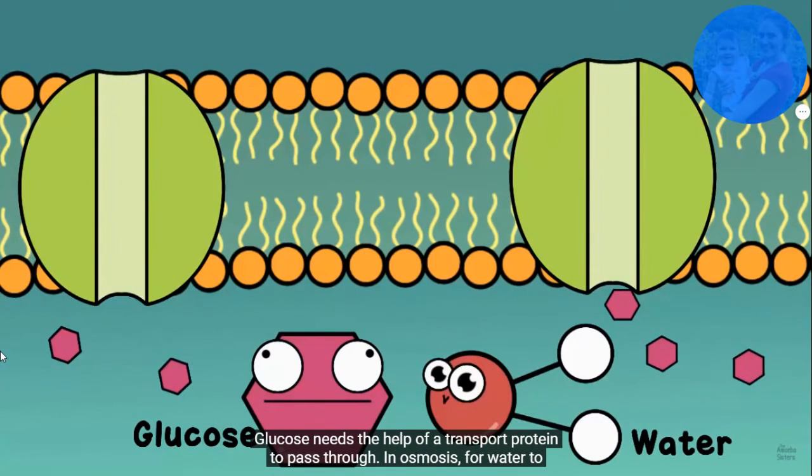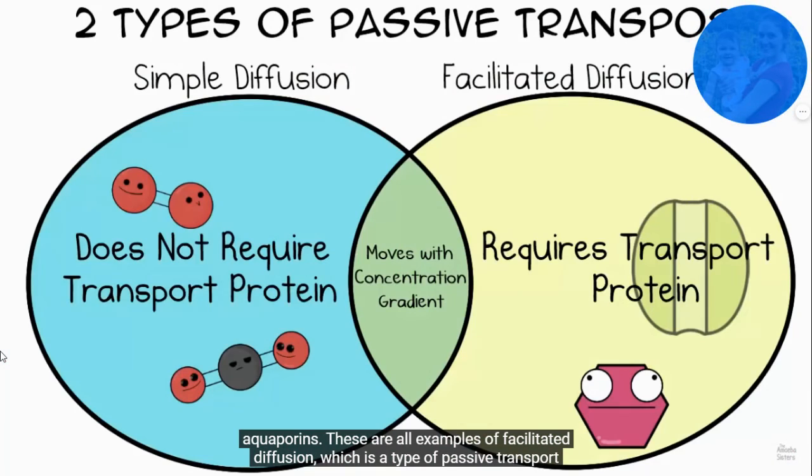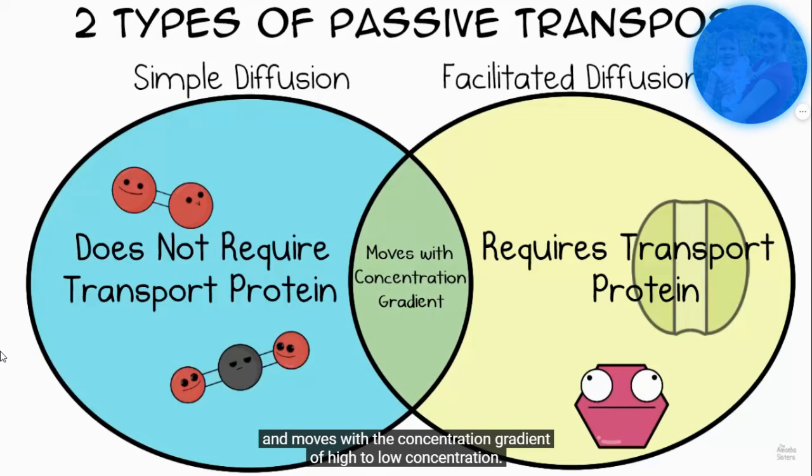In osmosis, for water to travel at a fast rate across the membrane, it passes through protein channels called aquaporins. So these are all examples of facilitated diffusion, which is a type of passive transport and moves with the concentration gradient of high to low concentration.